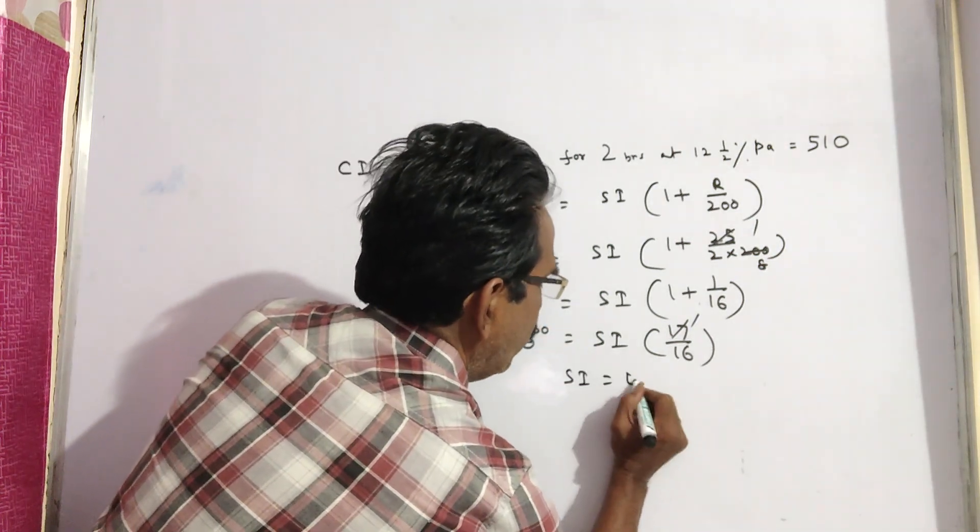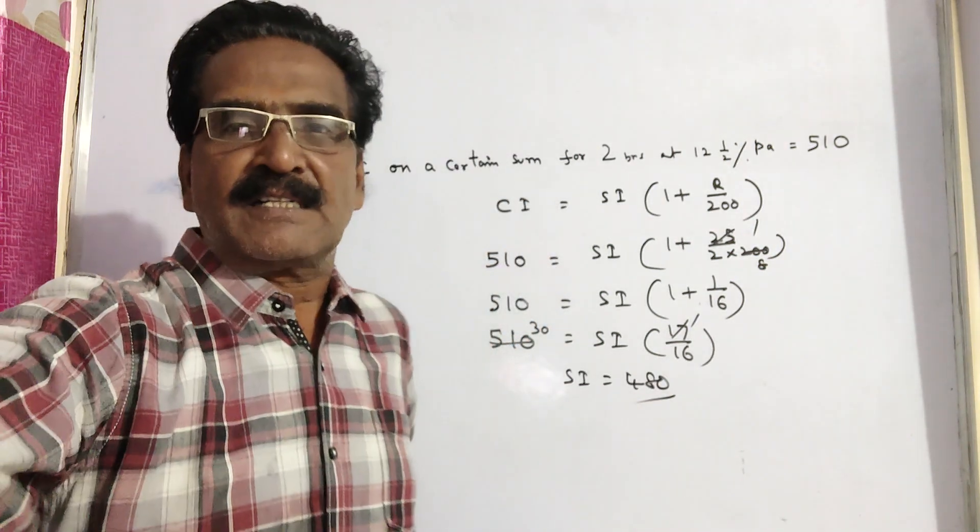So, SI is equal to 480 friends. 480 is your answer. Okay friends, thank you.